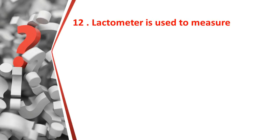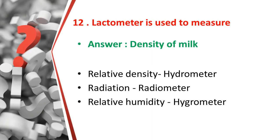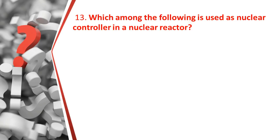The twelfth question: the lactometer is used to measure what? The answer is the density of milk. Related measuring instruments: relative density is measured by a hydrometer, radiation is measured by a radiometer, and relative humidity is measured by a hygrometer. So the lactometer is used to measure the density of milk.